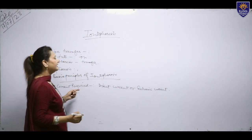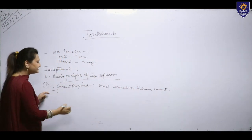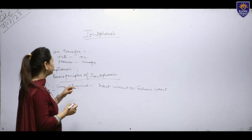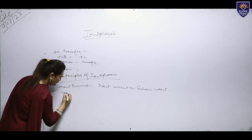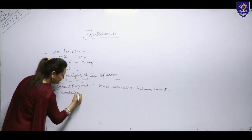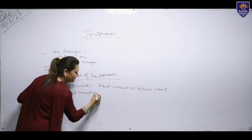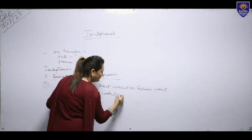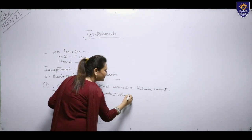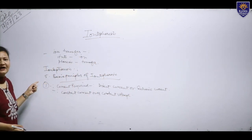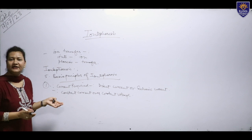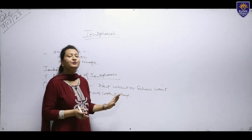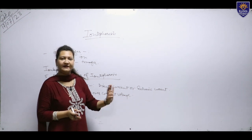We are preferring constant current over constant voltage. This was the first basic principle of iontophoresis — that we require direct current or galvanic current to produce an iontophoresis effect.